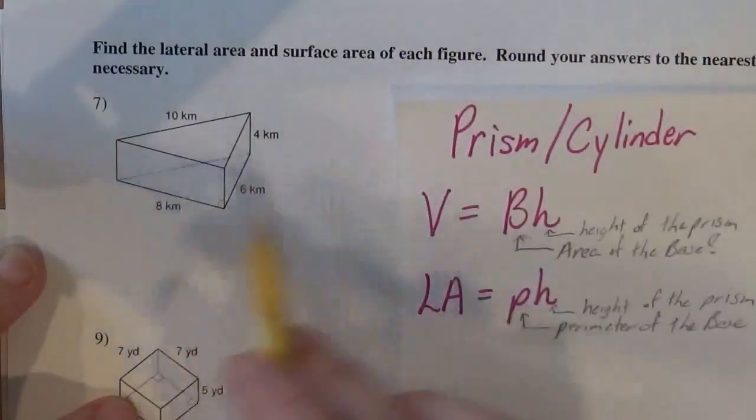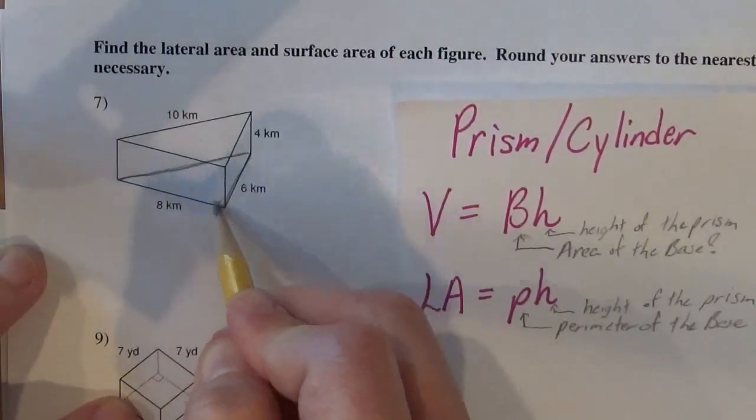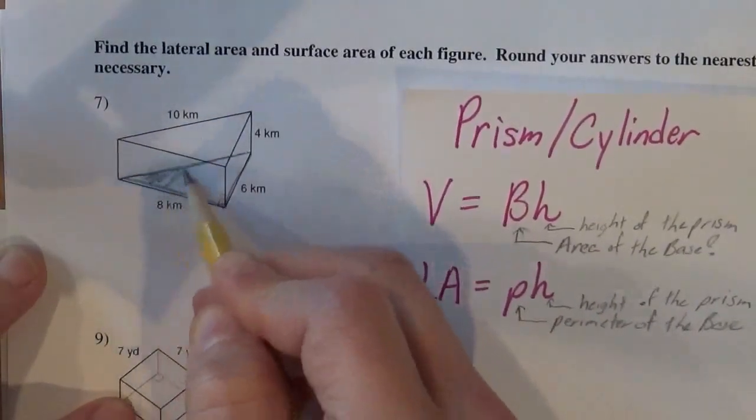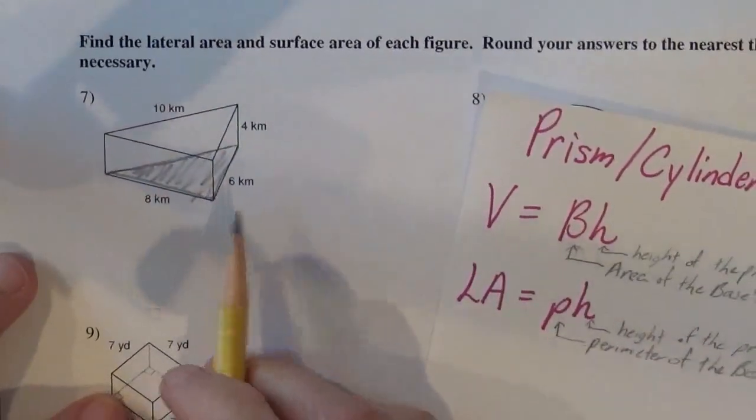And they want us to find the surface area. So what kind of prism is it? Well, it's a triangular prism because the base is two triangles connected.